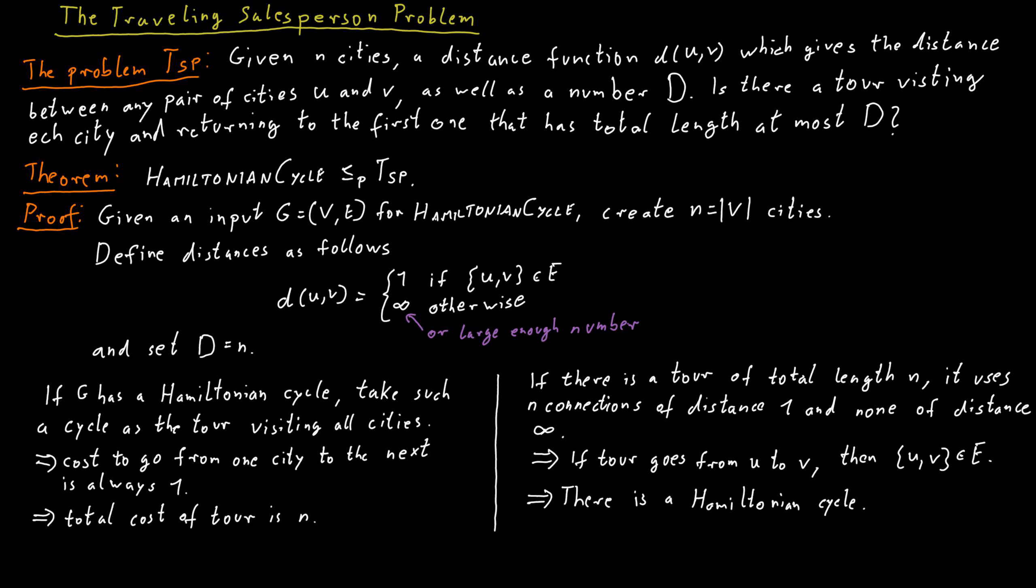What is a bit nicer is we can actually replace this infinity value by the number 2. So some cities have distance 1 from one another, and then other cities have distance 2 from one another.